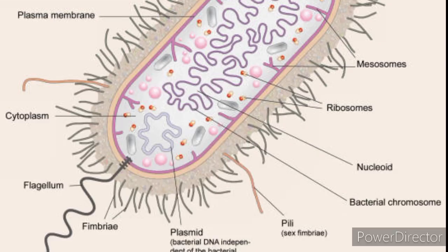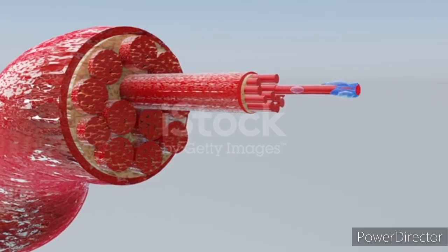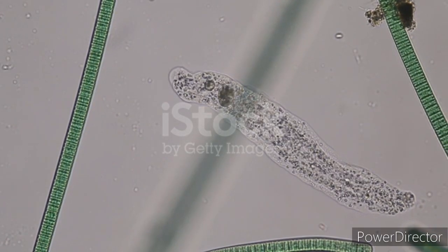Cell motility. Cytoskeletal elements contribute to cell motility in various ways. Actin filaments are involved in muscle contraction and cellular locomotion, such as in amoeboid movement or the crawling of cells during wound healing.